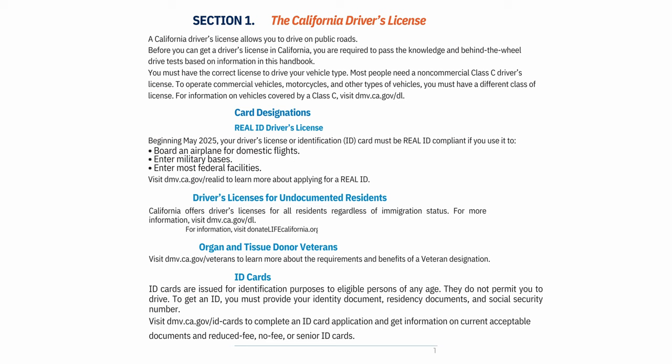To get an ID, you must provide your identity document, residency documents, and social security number. Visit dmv.ca.gov/id-cards to complete an ID card application and get information on current acceptable documents and reduced fee, no fee, or senior ID cards.